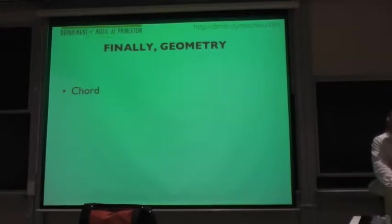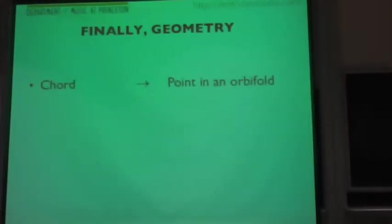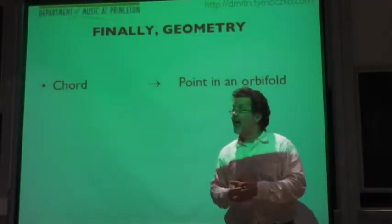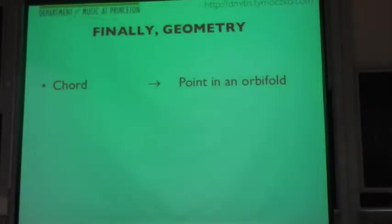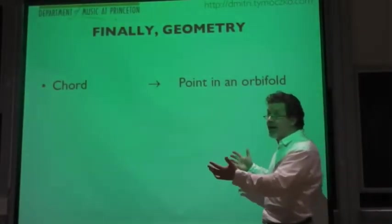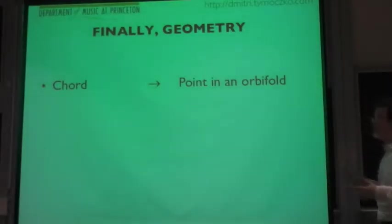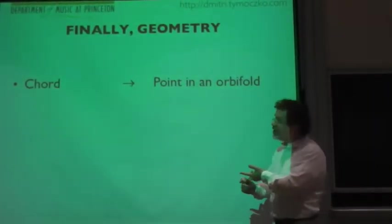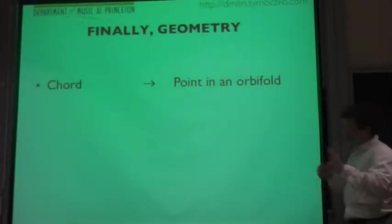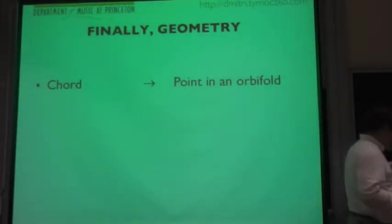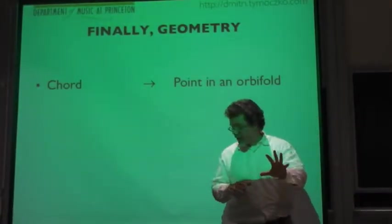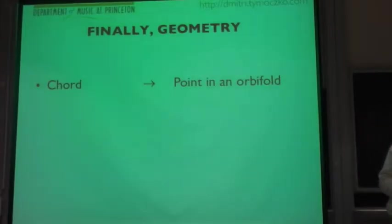But now, I'm going to finally get to geometry. Chords, it turns out, correspond to... Basically, the whole trick here is to think of the configuration space of unordered points on the circle when duplicates are allowed. What you do is you start with ordered points on the piano, that gives you R^n. You can think of that as the space where we care about what octave notes are in and what instrument is playing them. When we ignore octaves, we go to the n-dimensional torus. But we still care about which instrument is playing what.